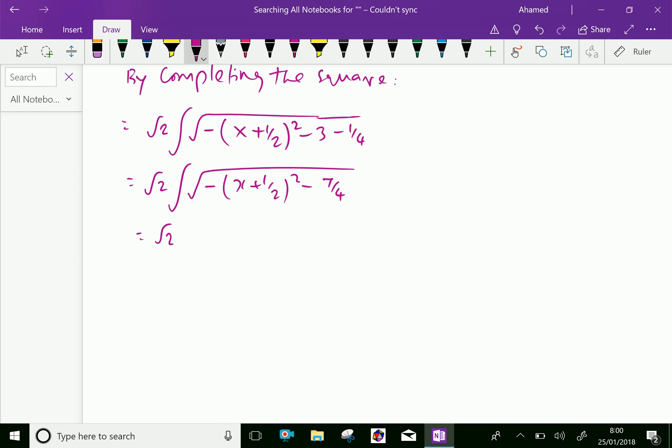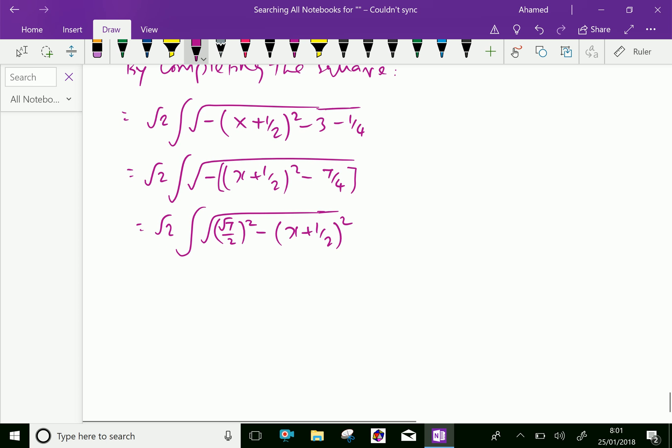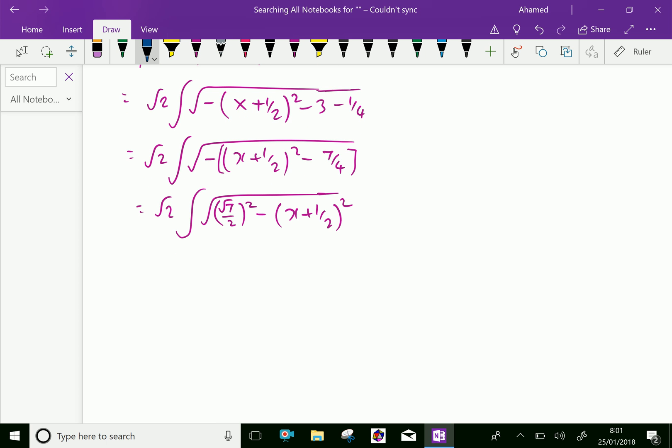Now we can rewrite this as square root of 7 by 2 whole square minus, and here we can write x plus half whole square. It's in the standard form of integral of k squared minus x squared model.